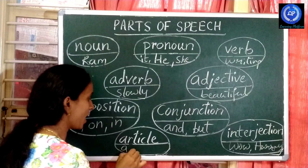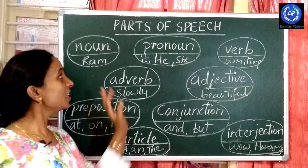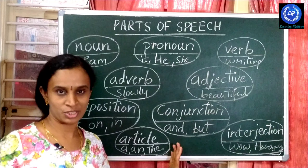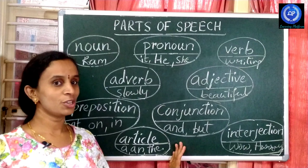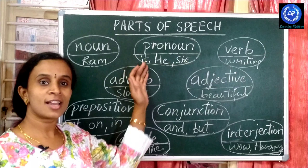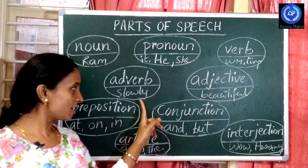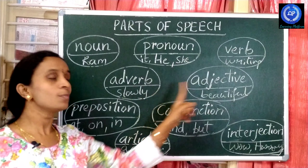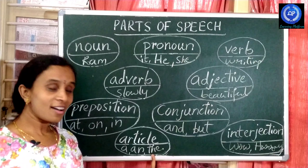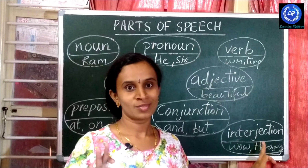A and the are articles. These are the nine parts of speech. In the next videos, we are going to learn in detail about noun, pronoun, verb, adverb, adjective, preposition, conjunction, article, and interjection. Thank you.